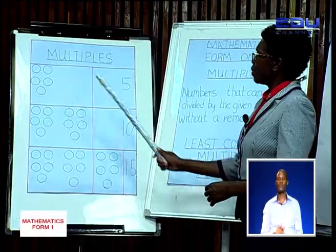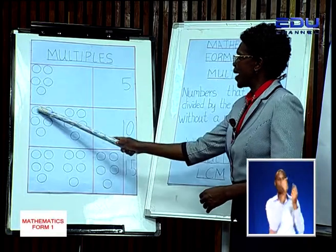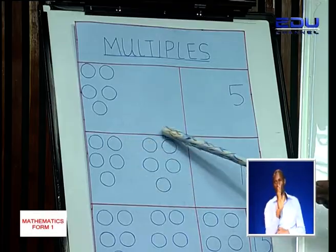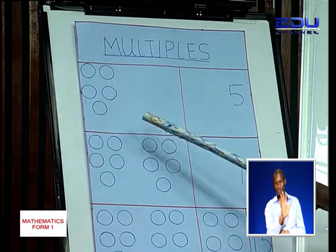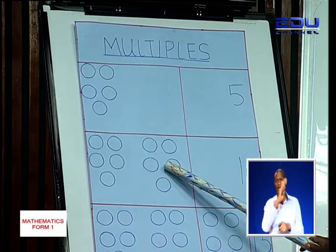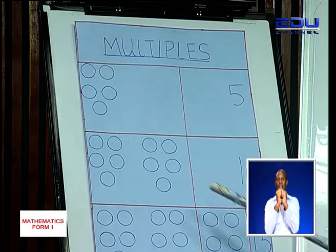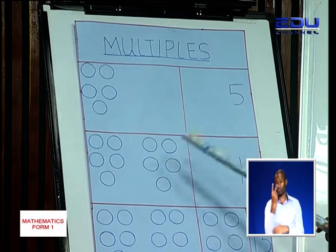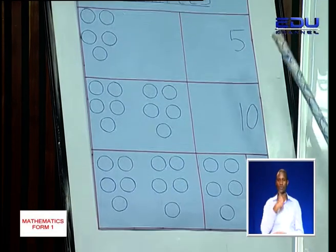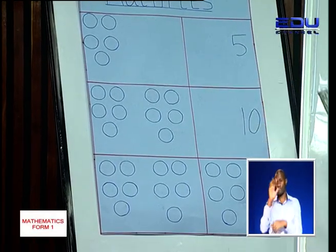I can put them in two groups — a group of 5 here and another group of 5. When you total 5 plus 5, it will give you 10. So we have two groups of 5, and we say another multiple of 5 is 10.